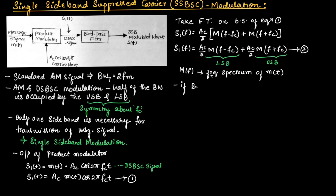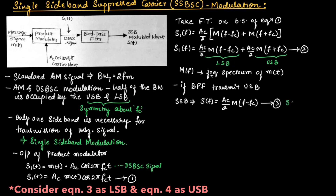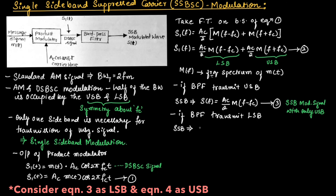If the band pass filter transmits the upper sideband, we get the SSB signal S(F) = (AC/2) · M(F − FC), which we call equation number 3 — the single sideband modulated signal with only USB. If the band pass filter transmits the lower sideband, then the SSB modulated wave is S(F) = (AC/2) · M(F + FC), which we call equation number 4.